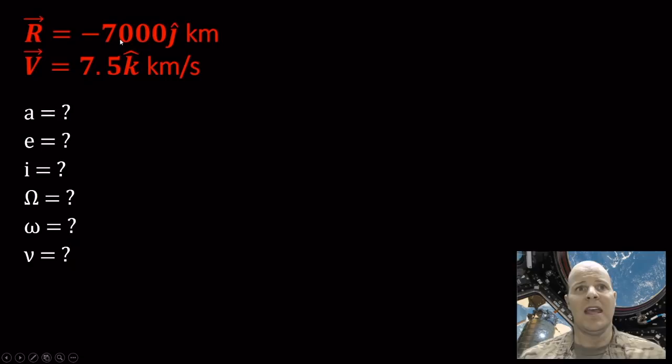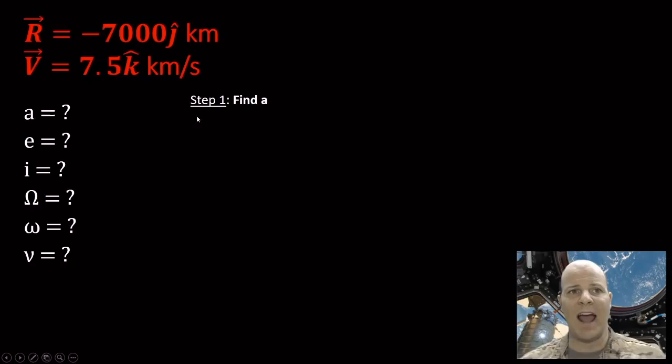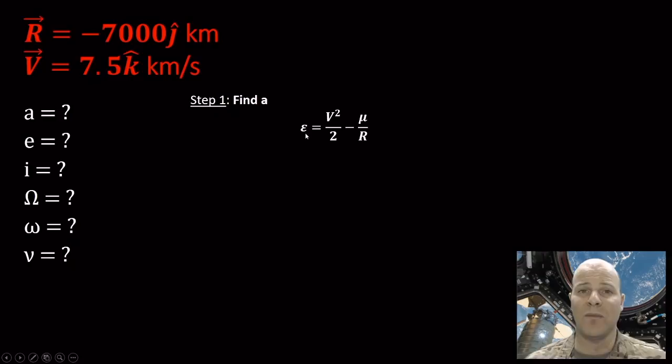This is the kind of information you might be given on a GR. We might give you an R vector equal to negative 7000 J-hat kilometers — this is in the IJK frame; the I and K components are zero, so they're left off. We also give you a velocity vector of 7.5 K kilometers per second. We might ask you to find the six orbital elements. The first step is: how do I find A, my semi-major axis?